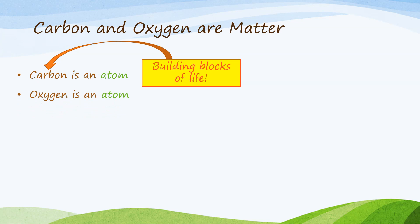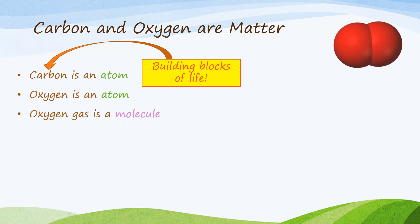Oxygen is another atom that can be found on the periodic table of elements and is important to all living things. Oxygen gas is a molecule — oxygen atoms don't like to float around by themselves in the air, so they bond in pairs of two. Oxygen gas is written as O2.